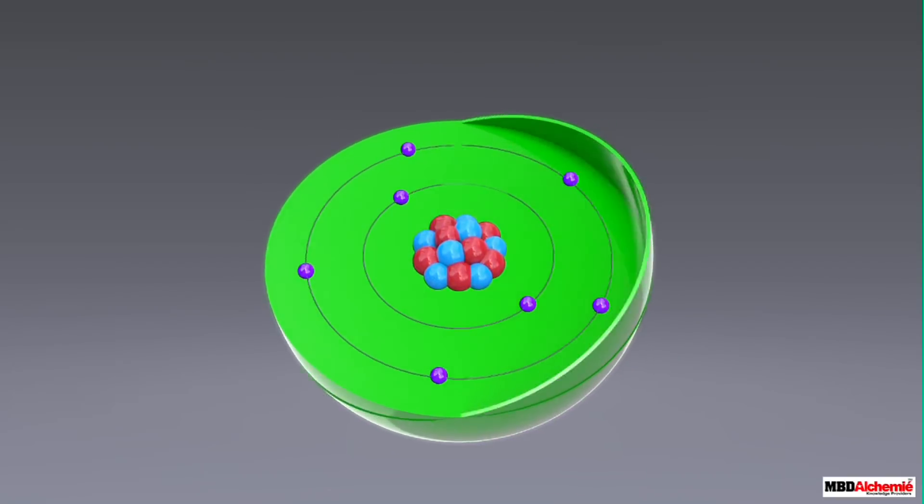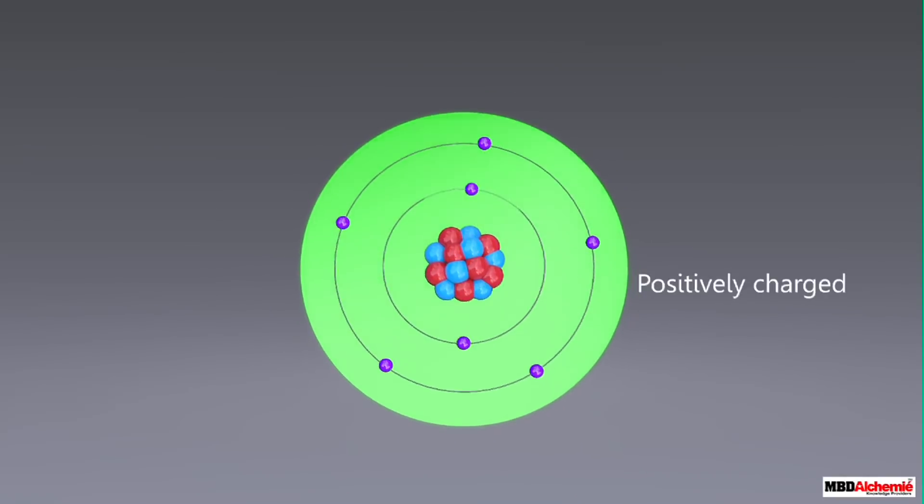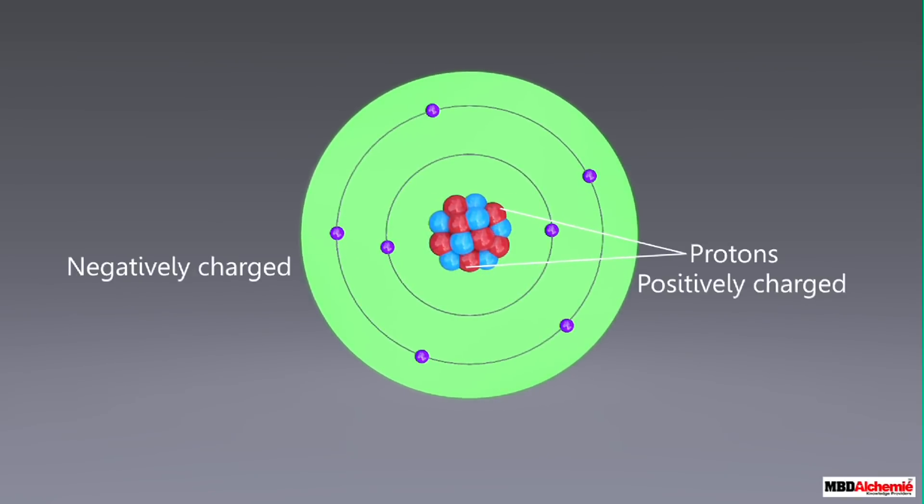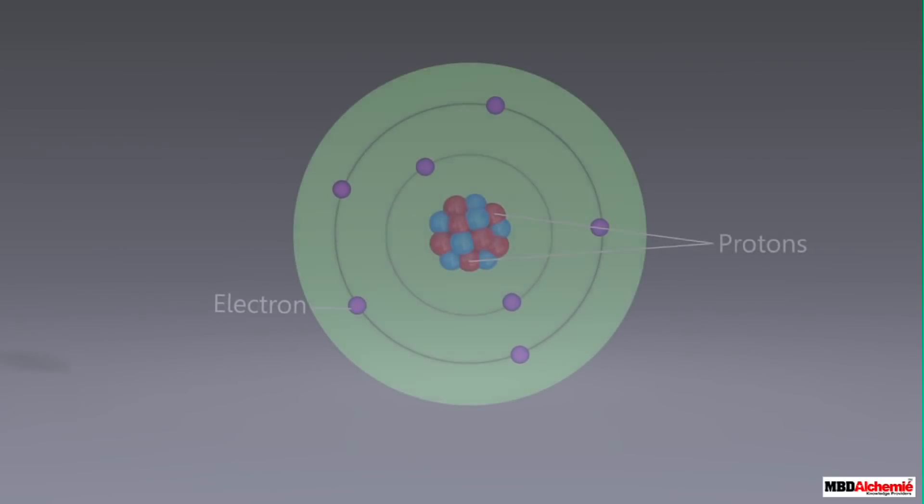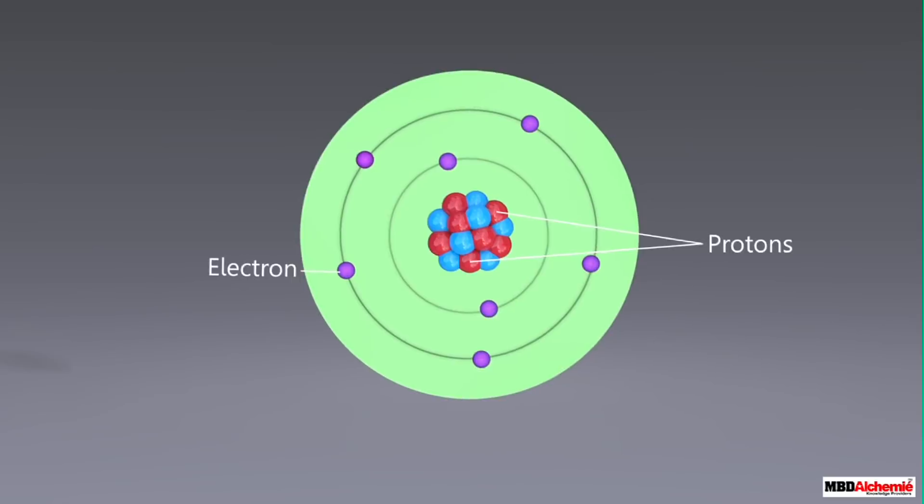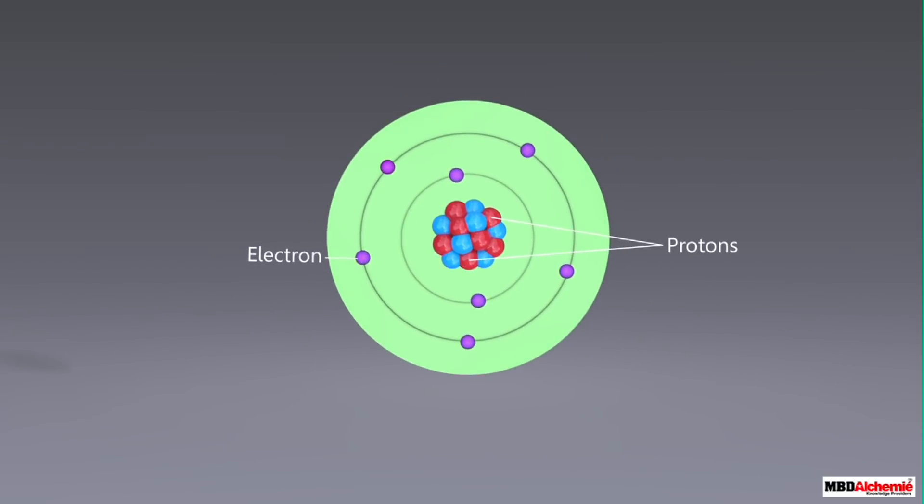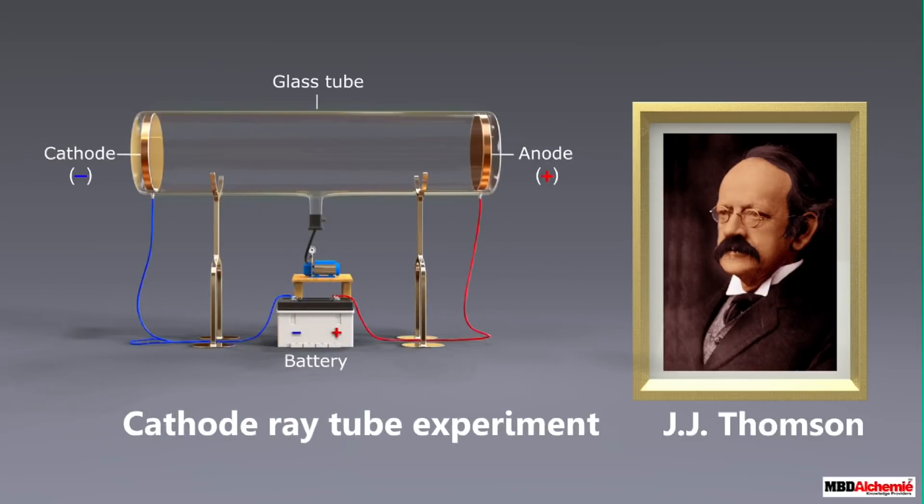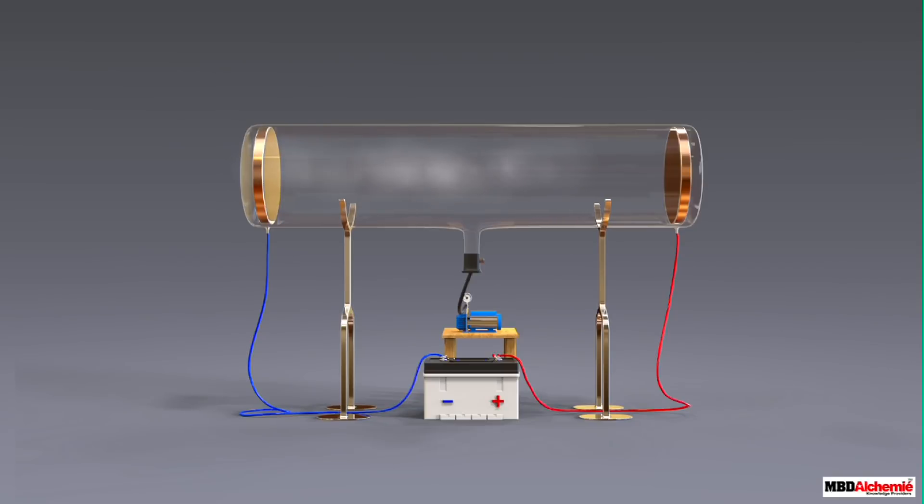When positively charged, these are known as protons. When negatively charged, these are known as electrons. Now that we know what these are, it is also important for us to know by whom they were discovered and how. The credit for the discovery of the electron goes to Sir J.J. Thompson. An experiment that helped him discover this was the cathode ray tube experiment.